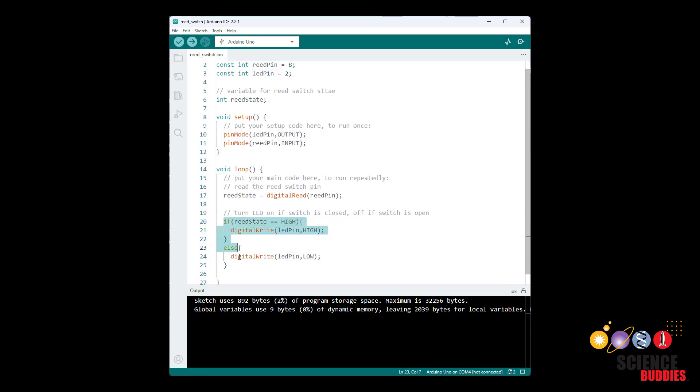Finally, I have an if else statement that checks if the reed state variable is high, meaning the switch is closed and a magnet is detected nearby. In which case, I use the digital write command to turn the LED on. Otherwise, I turn the LED off.